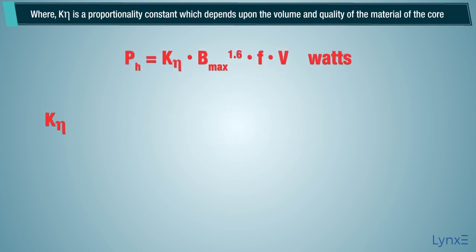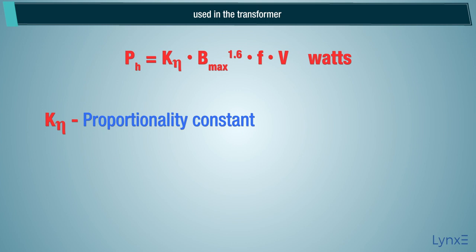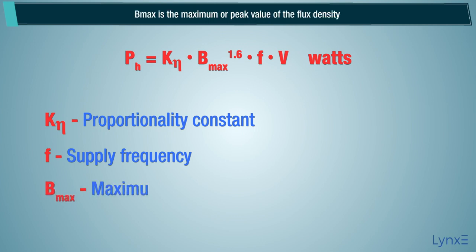Where k eta is a proportionality constant which depends upon the volume and quality of the material of the core used in the transformer. F is the supply frequency. Bmax is the maximum or peak value of the flux density.